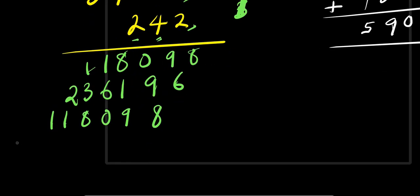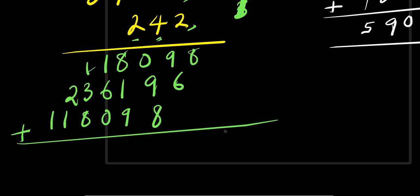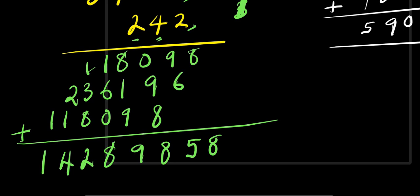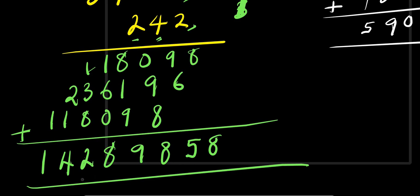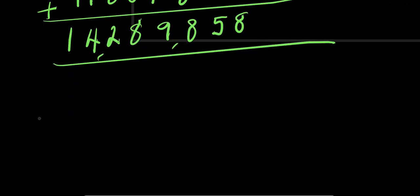So we add up everything together. This is 8; this is 15, carry 1; 10 plus 8 is 18, carry 1; 9 plus 1 plus 1 is 11, plus 9 is 19, carry 1; 2 plus 6 is 8; 1 plus 3 plus 4 plus 8 gives 12, carry 1; 3 plus 1 is 4; and we have 1 here. So what we are having is 14,289,858. This is the value of 3 to the power of 15 minus 3 to the power of 10.